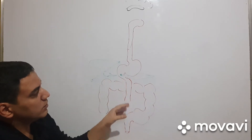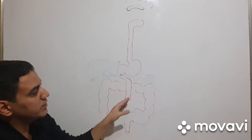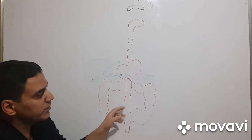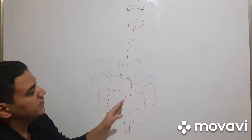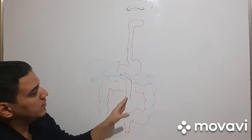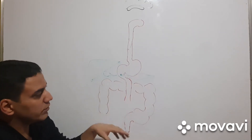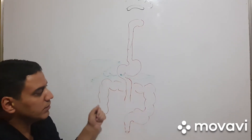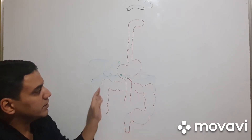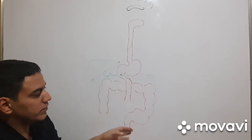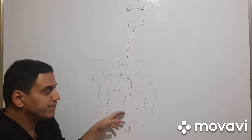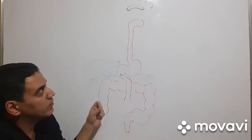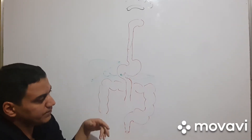Then the small intestine, where there is cavity digestion and membranous digestion, as well as secretion and motor function. Then the bowel: ascending, transverse, descending, sigmoid, and rectum. This, in general, is what our digestive system consists of.